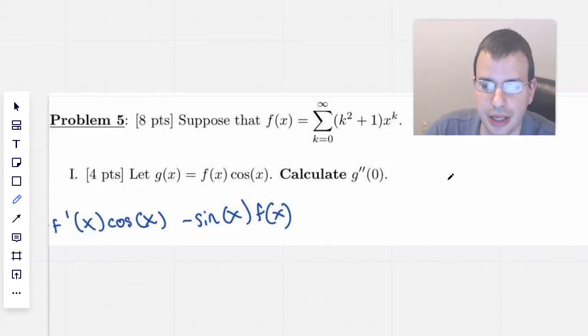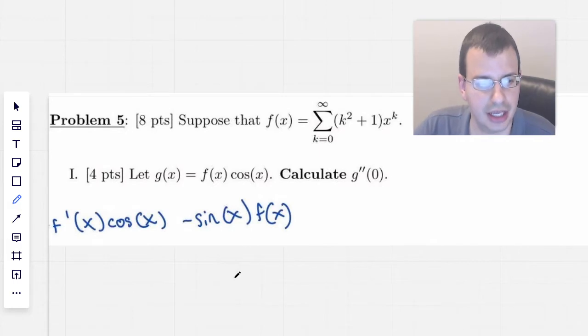Suppose that f(x) equals summation of k equals 0 to infinity of (k² + 1) times x to the k. Let's suppose that g(x) equals f(x) times cosine of x, and we want to calculate g''(0).